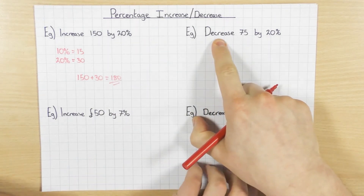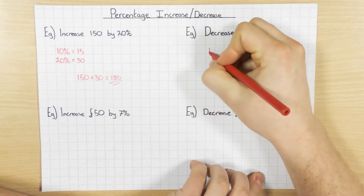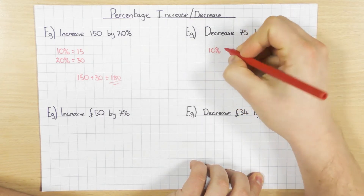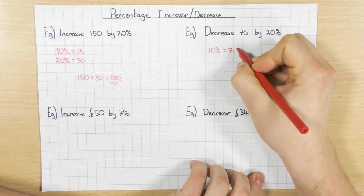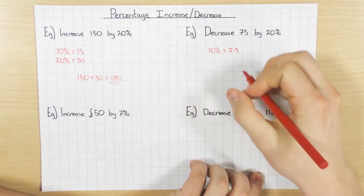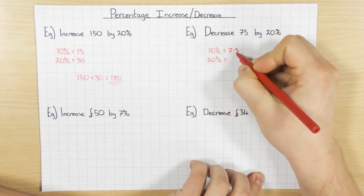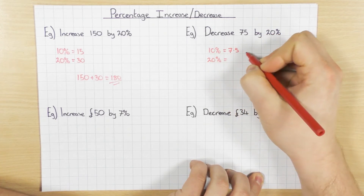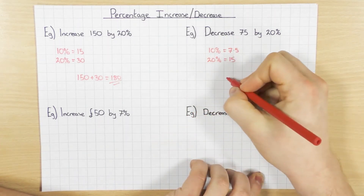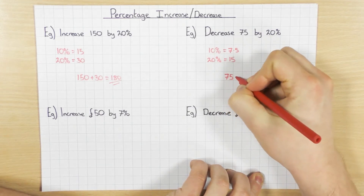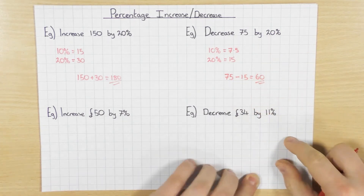Next one. This time I'm going to decrease 75 by 20%. So exactly the same process to find 20% — I'm going to find 10%. Divide 75 by 10, just move the decimal point to the left one, which gives me 7.5. Then 20% is double 10%, so 7.5 plus 7.5 is 15. And this time, because I'm decreasing, I'm going to take away. So 75 take away 15 leaves me with 60 for my final answer.